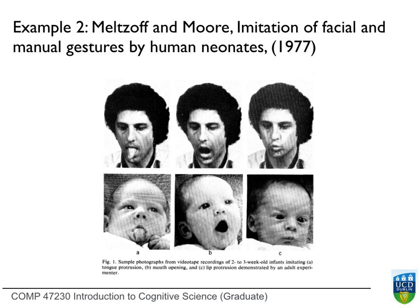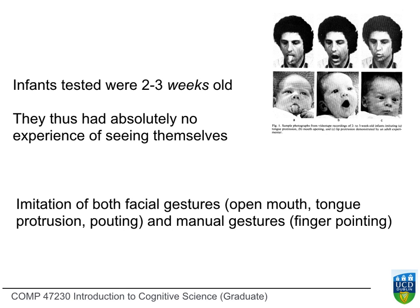There were three facial gestures and two hand gestures which these neonates — and they were very, very young, two to three weeks old — were tested on. The basic setup is: you get these very, very young infants, much younger than the previous study, and you interact with them, make funny faces at them, wave your hands at them, and look to see what they imitate. These infants are so young and they've never seen themselves — they have no experience of mirrors, they've never seen their own faces. The claim in this very influential paper was that there were three facial gestures and one manual gesture — out of four facial and two manuals tested — which the infants regularly and reliably imitated. The facial ones were the open mouth, tongue protrusion, and pouting. The manual one was finger pointing.